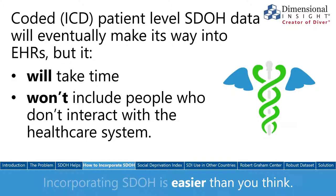Given the importance and potential of social determinants, we should try to integrate what's available into our approaches for population health. Population data sets rich in social determinants would allow people on the front lines to make more and better data-driven decisions. So just where does social determinants of health information come from?